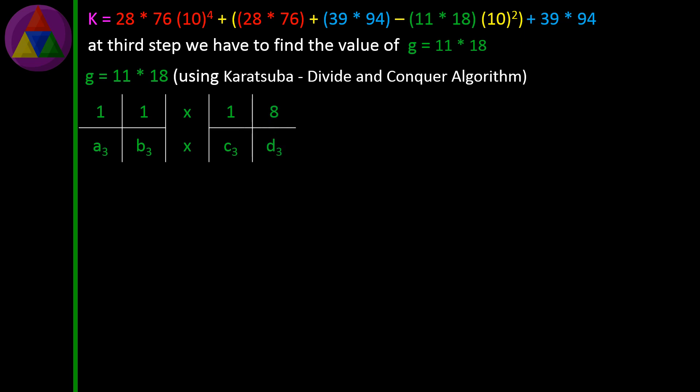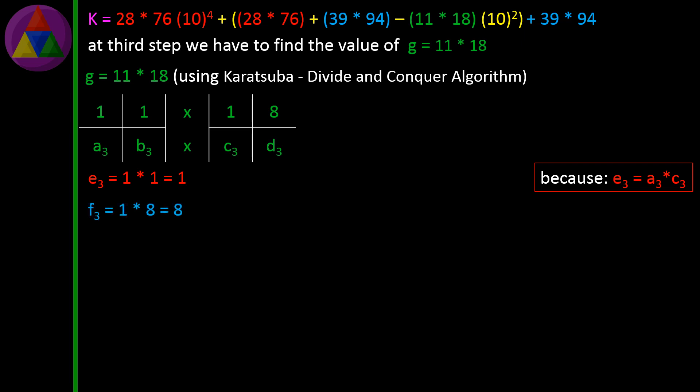11 × 18 is divided into 4 individual cells and labeled as A3, B3 and C3, D3. E3 = 1 × 1 = 1, because E3 = A3 × C3. F3 = 1 × 8 = 8, because F3 = B3 × D3.